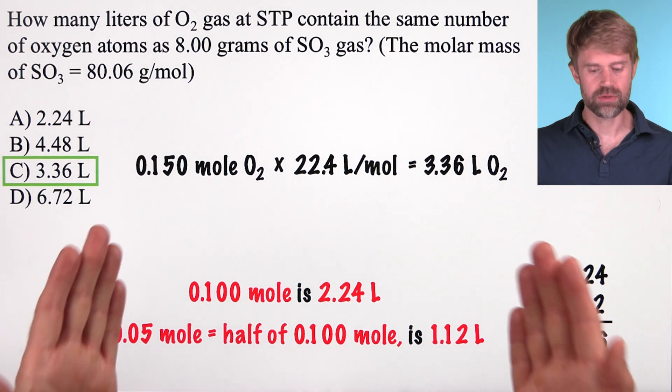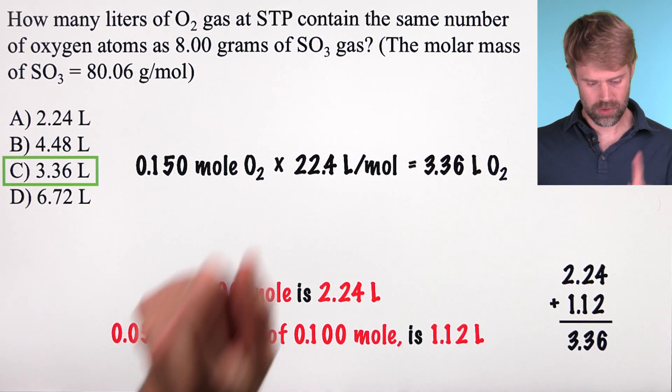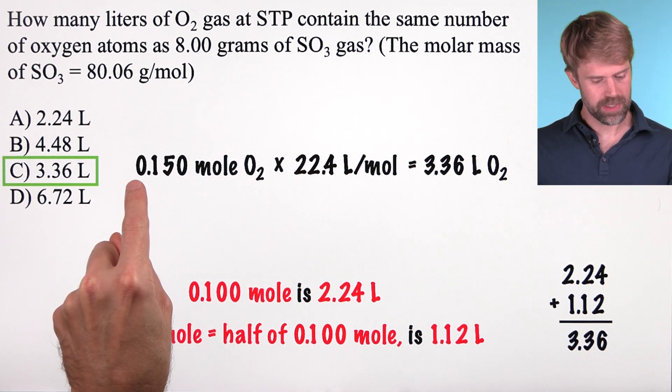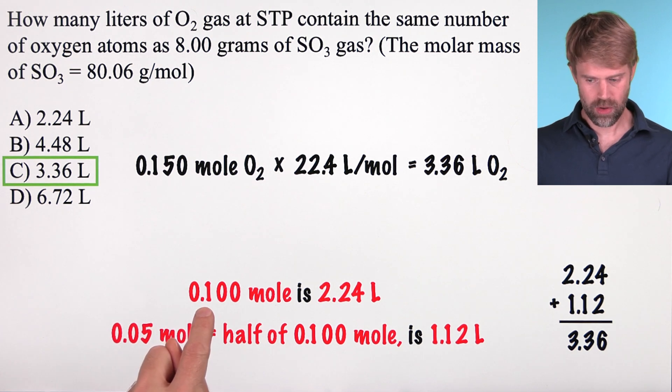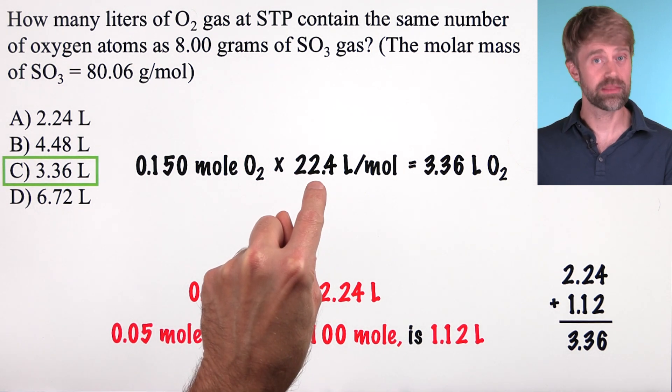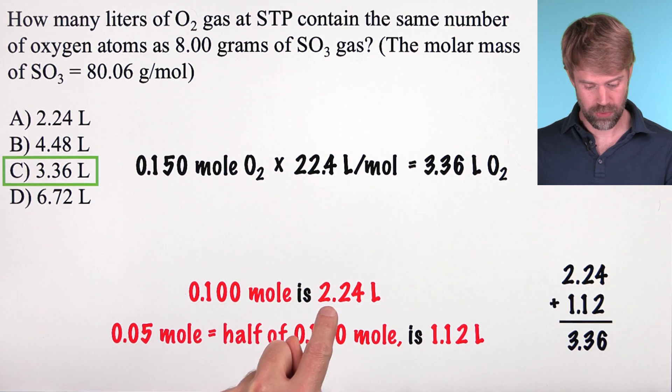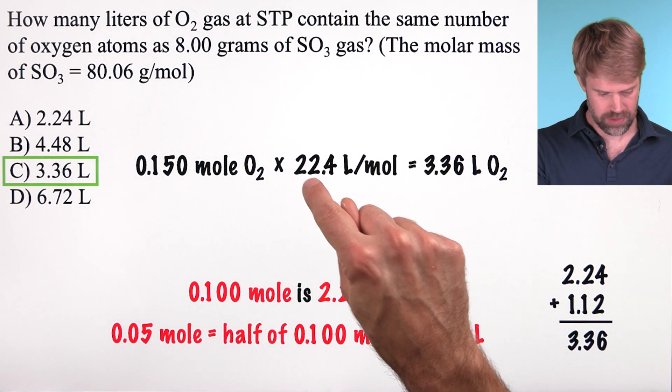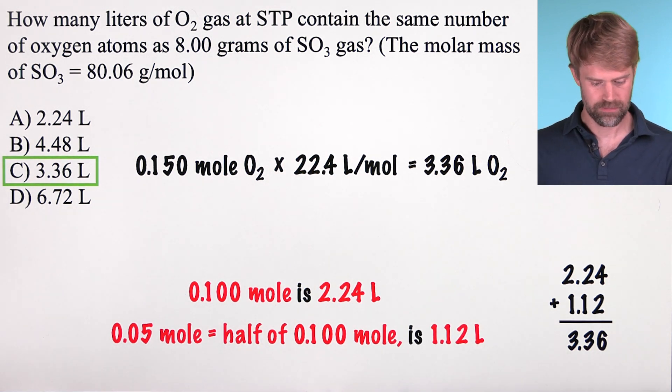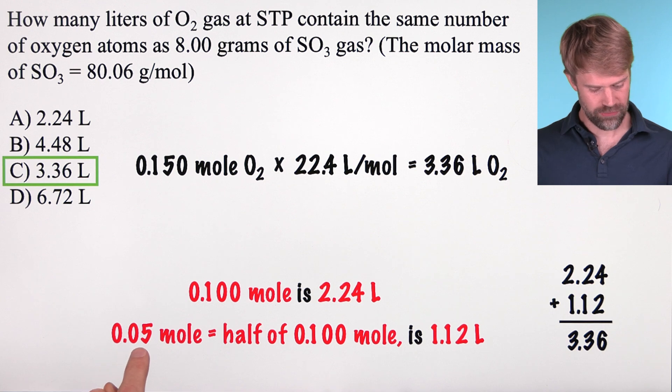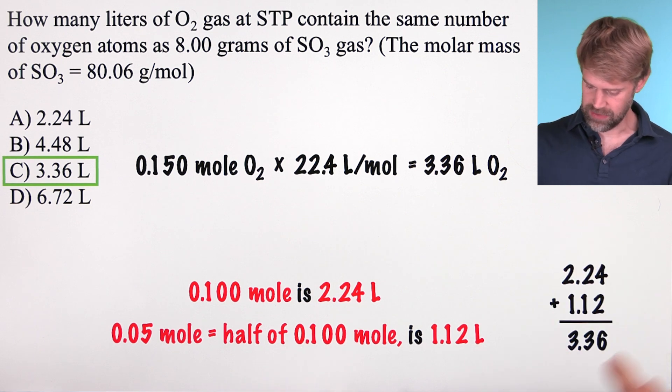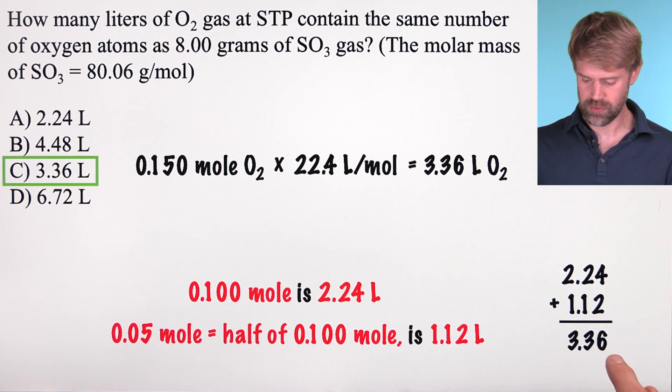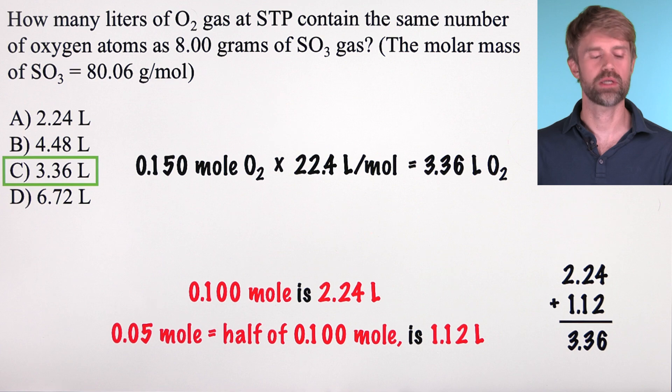But you don't even need to use a calculator here. We're multiplying 22.4 by 0.15. 0.1 mole would take up one tenth of this amount which is 2.24. Just move the decimal point over one space. And then 0.05 moles is just half of this which is 1.12. Add these together and you get 3.36. Choice C.